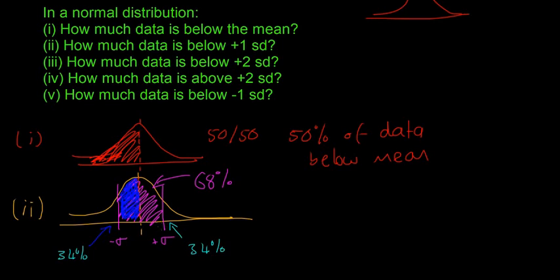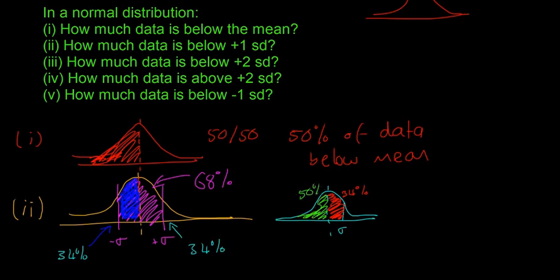So now if we want to find what is below one standard deviation, the red bit from the mean to plus 1 SD is 34%, and then the green bit — the left half of the curve — is 50%. So altogether, 84% is below one standard deviation. You'll see the same tricks being used over and over again, and after a while it becomes quite simple.